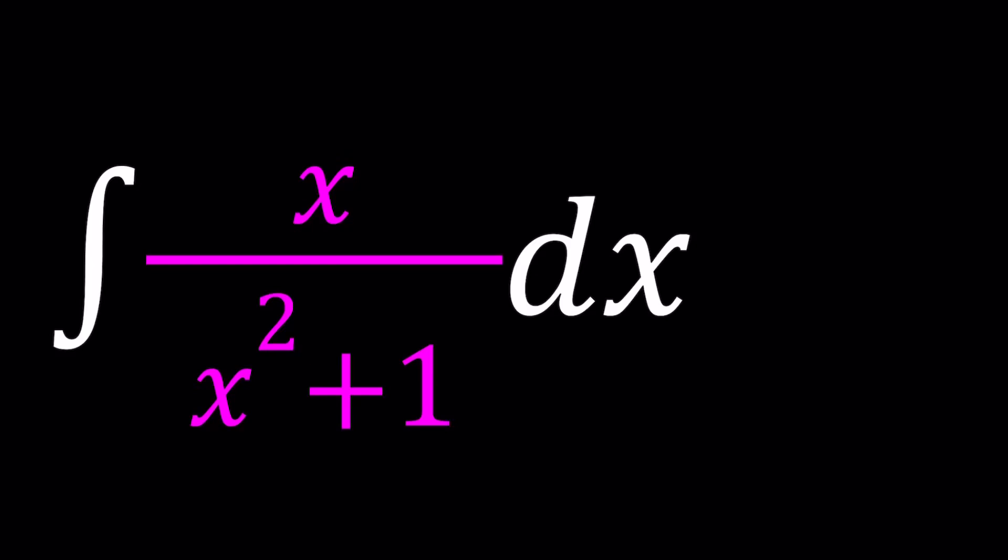Hello, everyone. In this video, we're going to be integrating a rational function, x over x squared plus 1 dx. This might look like a very simple problem, and it actually isn't too hard, but I'll be presenting three methods. Can you solve this problem in three different ways? Let's find out.